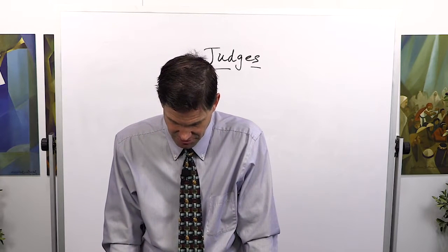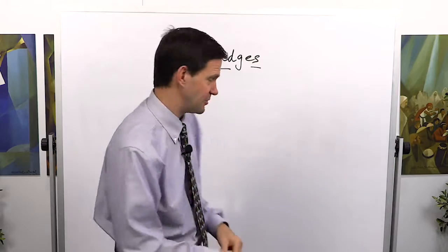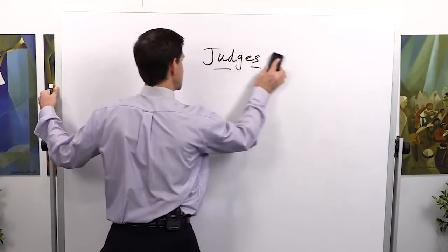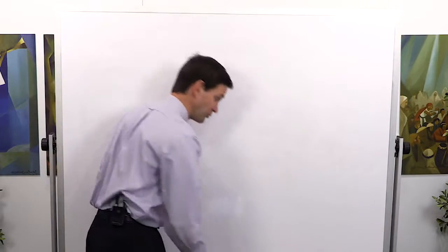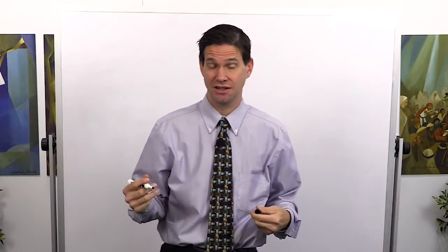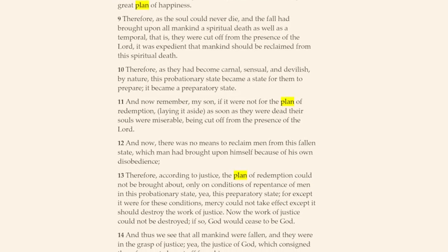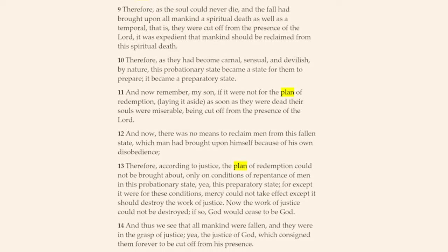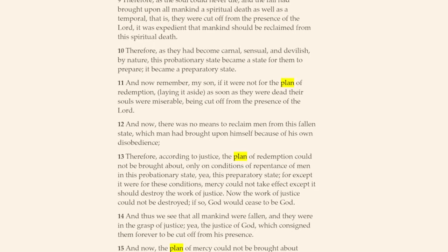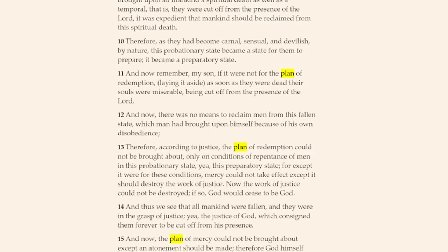And now he gets to chapter 42, where he describes some pretty profound and deep doctrines regarding the plan of redemption. You'll notice how often he uses these ideas of plan—plan of salvation, plan of redemption, plan of happiness.